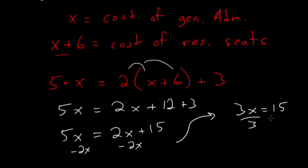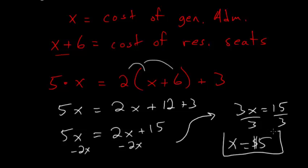Dividing each side by three gives us x equals five. So the cost of the general admission ticket is five dollars, which is what we were looking for.